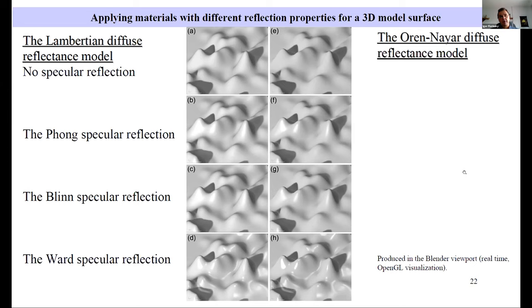Here you can see differences of various materials used for 3D modeling. Materials in Blender and generally in computer graphics means applying different reflectance models to the surface. For terrain modeling, there are two main options in Blender. It's Lambertian diffuse reflectance model and Oren-Nayar diffuse reflectance model. Here you can see differences between these two models with and without specular reflection. Without specular reflection here. Phong specular reflection is the most well-known model of specular reflection. Blinn specular reflection and Ward.